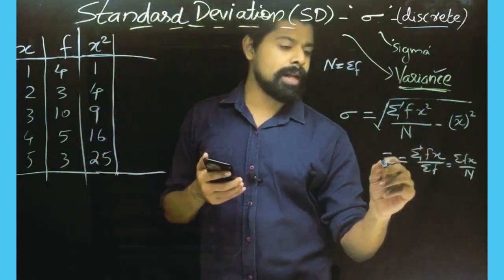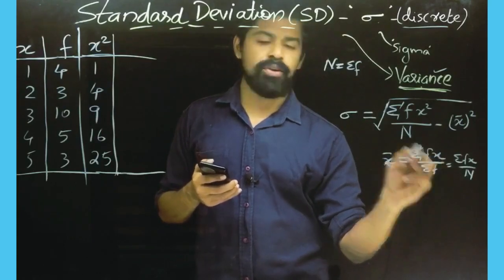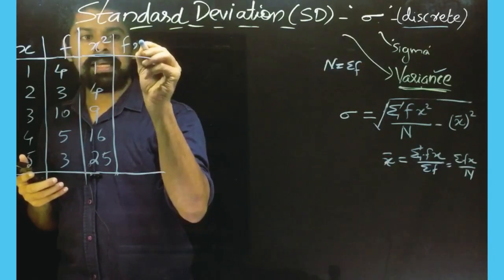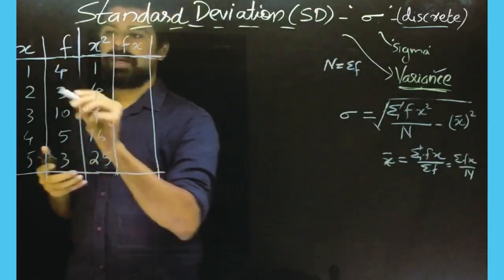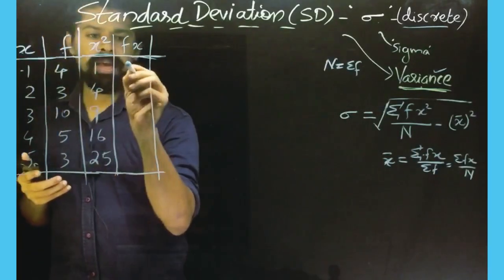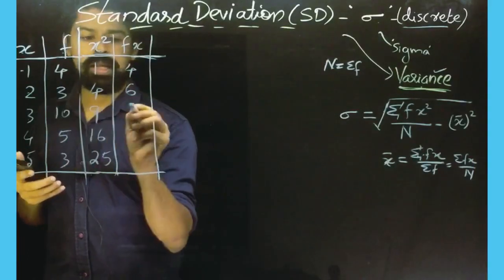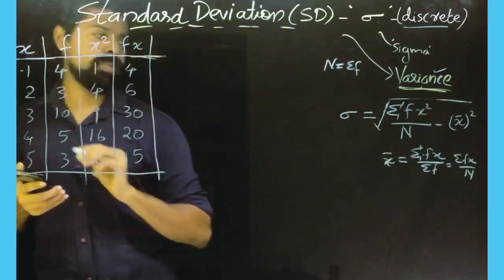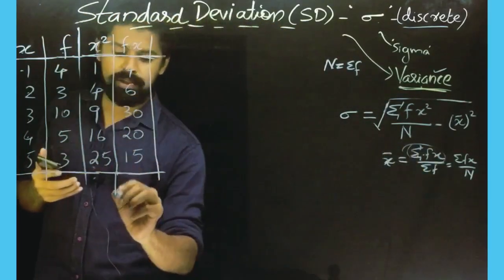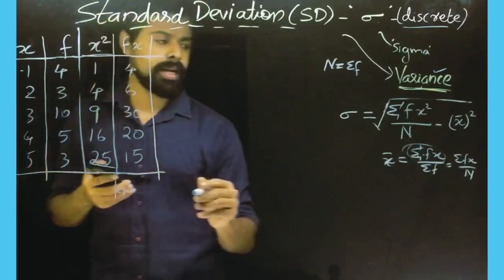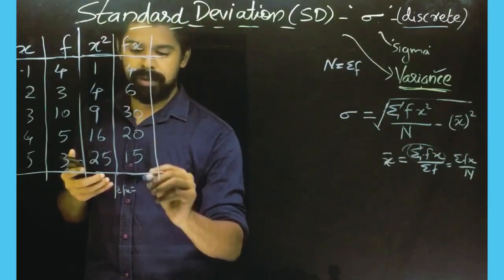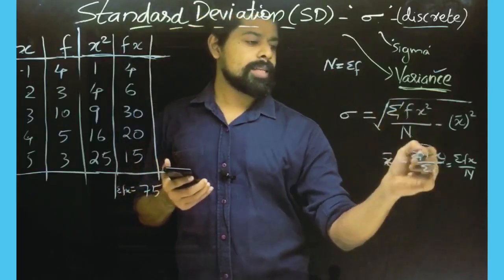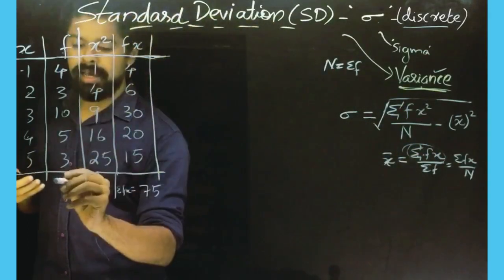So we have f into x squared. We compute f·x²: 4 into 1 squared is 4, 4 into 4 is 4 (i.e., 1×4=4), 3 into 9 is... giving values of 4, 4, and continuing: 10 into 9 is 30 (wait: reading the columns), 5 into 16 is 20 (wait: 5 into 25 is... ), 3 into 25 is 75. The total sigma fx² equals 75.